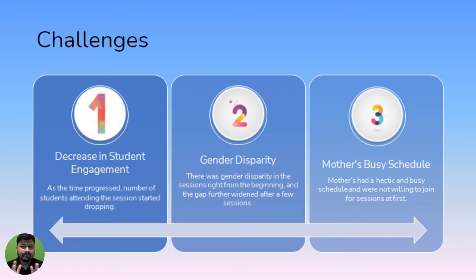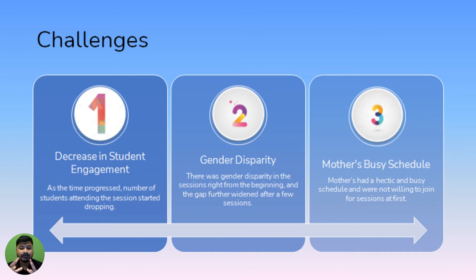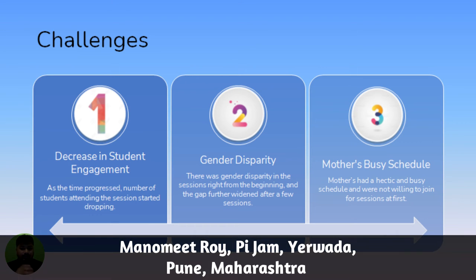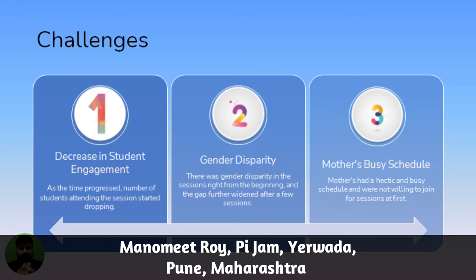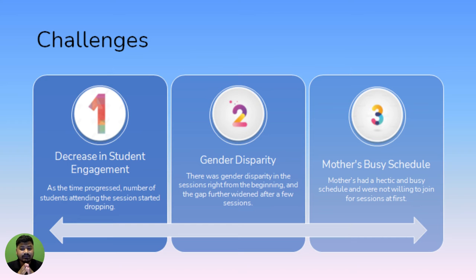If we talk about the challenges, one of them was that after a few sessions with the students, we observed that student engagement was decreasing. The number of students turning up for the session went down by approximately 40%, and that also led to a gender disparity in the batch. The main reason for the gender disparity was the involvement of girls in household work, as most of the time they were helping mothers with housework. To solve this problem, we planned to involve parents in our CT program and give an opportunity to parents, especially mothers, to explore computer science so that they have a clear idea of what computational thinking is all about and how they can support their children to actively participate in this program.